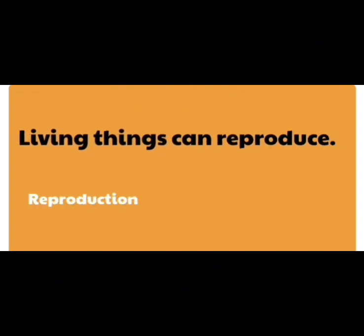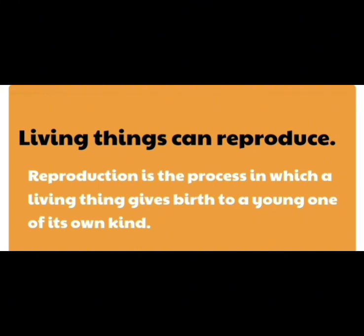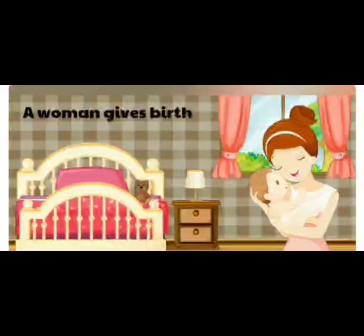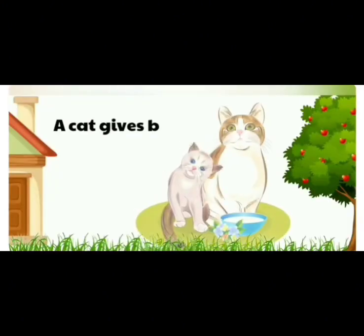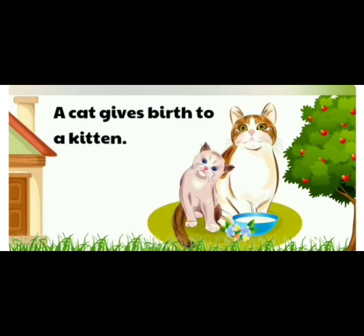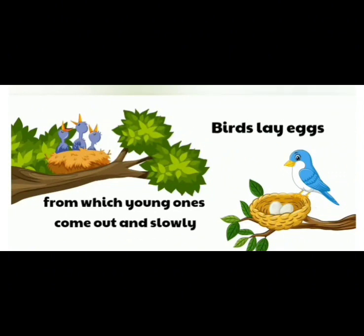Living things reproduce. Reproduction is the process in which living things give birth to a young one of its own kind. A woman gives birth to a baby. A cat gives birth to a kitten. Birds lay eggs from which young ones come out and slowly grow into adults.